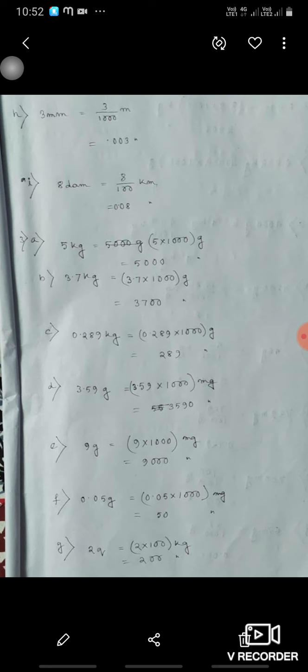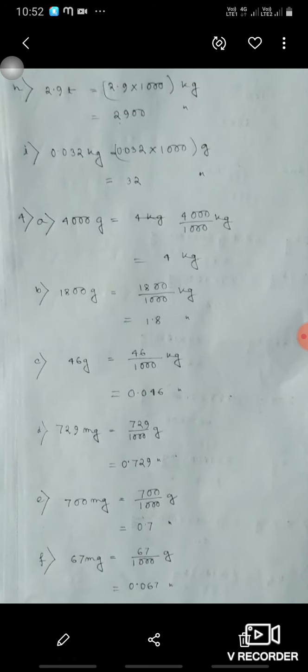2 quintal means 2 into 100 kilogram, that is 200 kilogram. 2.9 ton means 2.9 into 1000, that is 2900 kilogram. 0.032 hectogram means 0.032 into 100, 3.2 gram. 4,000 gram means 4,000 upon 1000 means 4 kilogram. 1,800 gram means 1,800 upon 1000 kilogram means 1.8 kilogram.